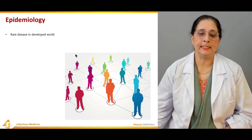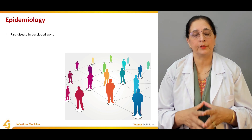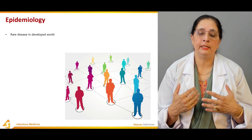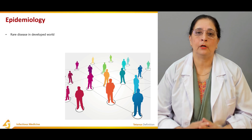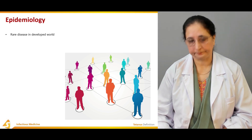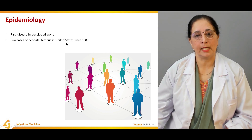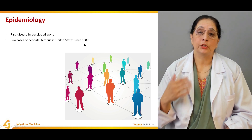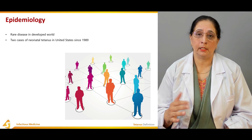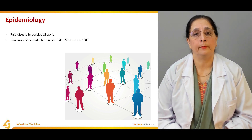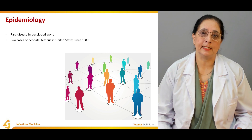Regarding epidemiology, tetanus is a rare disease in the developed world. In developed countries where the vaccination system and follow-up are good, the rate of tetanus is not high. For example, there have been only two cases of neonatal tetanus in the United States since 1989 — showing how low the rate is in developed countries over roughly 30 years.